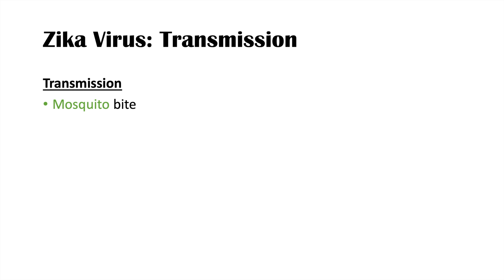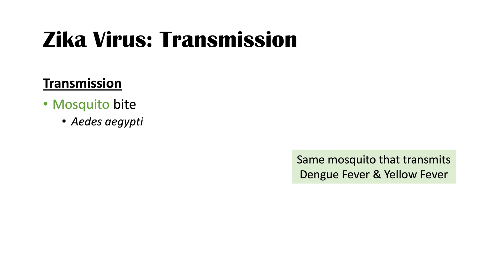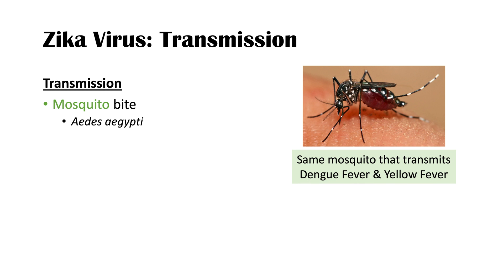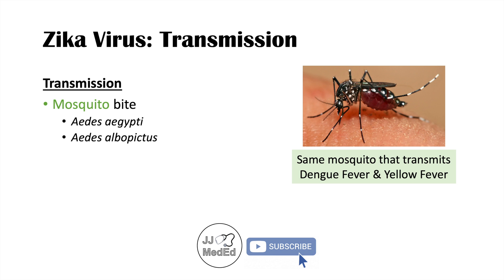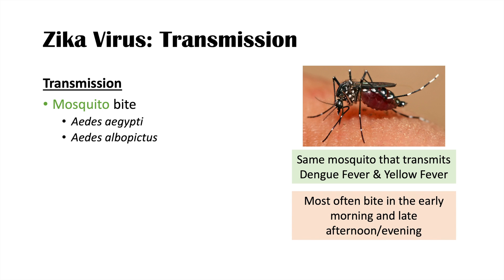The virus is transmitted through the bite of the mosquito Aedes aegypti — the same mosquito that transmits dengue fever and yellow fever. It can also be transmitted by the related species Aedes albopictus. These mosquitoes tend to bite in the early morning hours and late afternoon and evening hours.